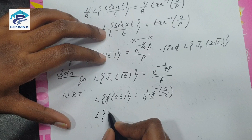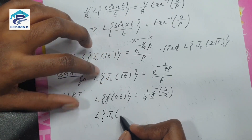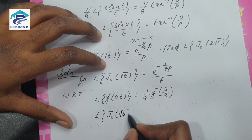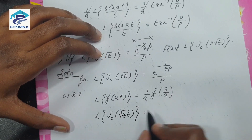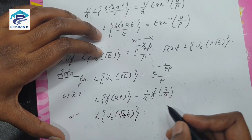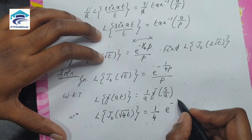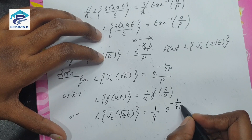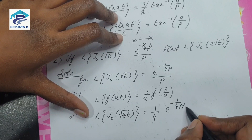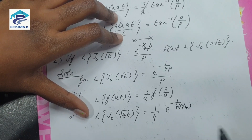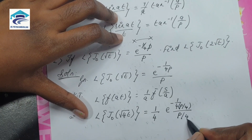So L of J₀(√(4t)), which is L of J₀(2√t), equals (1/4) times e to the power minus 1/(4p) evaluated at s/a, where a is 4, so it is s/4. The p in the denominator also becomes p/4.